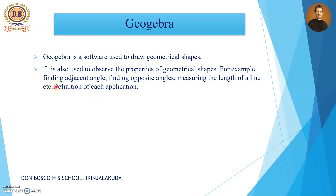GeoGebra is a software used to draw geometrical shapes like triangles, rectangles, etc., and also it is used to observe the properties of geometrical shapes. The examples of properties are: finding the adjacent angle, finding the opposite angle, and measuring the length of a line, etc.